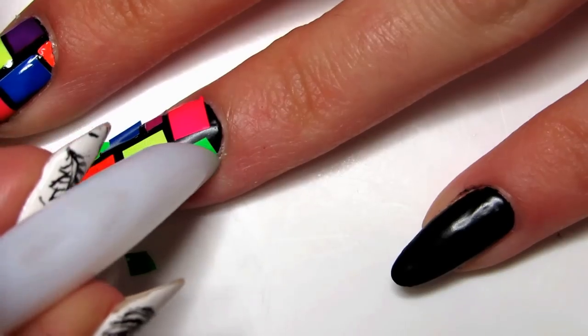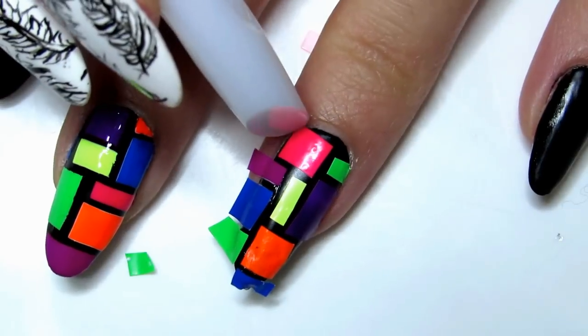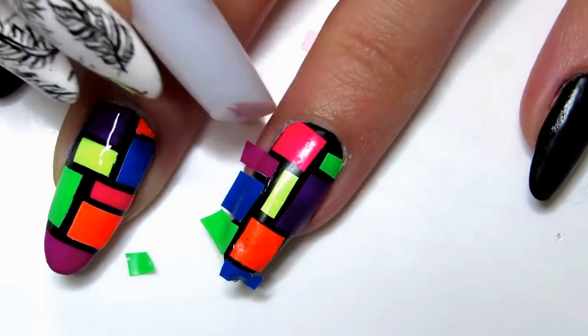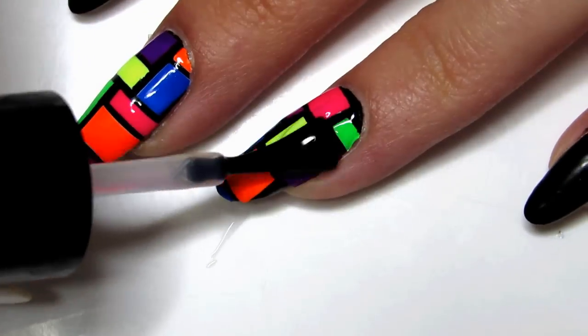Remove any edges off by using a cuticle pusher and pressing in the indentation around your nail bed. Apply your top coat and you're all done.